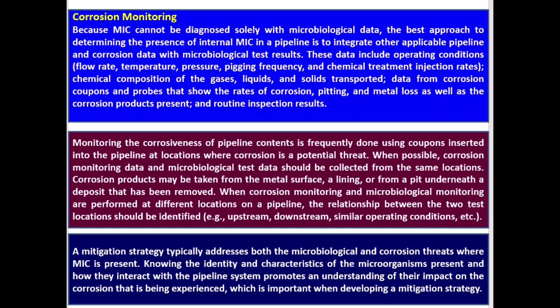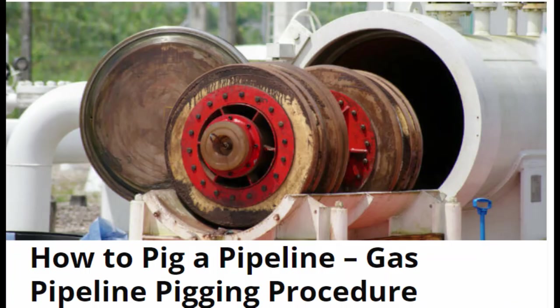A mitigation strategy typically addresses both microbiological and corrosion threats where MIC is present. Knowing the identity and characteristics of the microorganisms and how they interact with the pipeline system promotes understanding of their impact on corrosion, which is important when developing a mitigation strategy. This describes the process of pigging — cleaning a pipeline from debris, sand, corrosion products, etc. — using a gas pipeline pigging procedure.